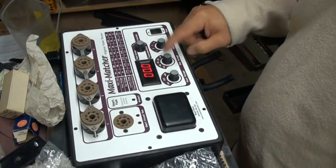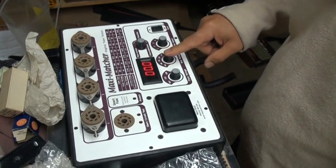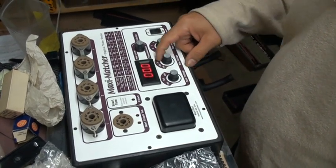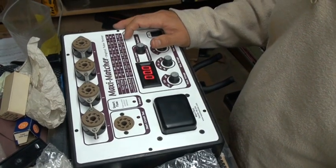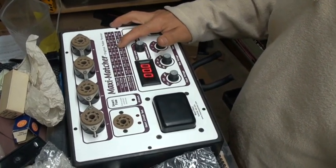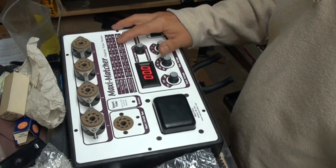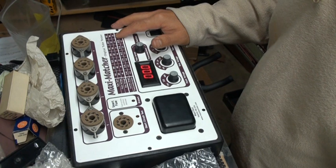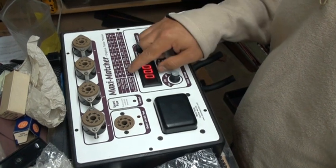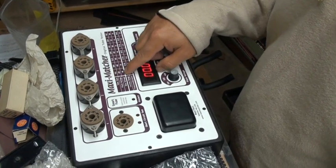Right here is the bias current of the tube. Like EL34s are minus 36, so are other tubes here like 6V6 is minus 36 bias current. Then you have EL84s at minus 14 and then you have 7027 at minus 48.